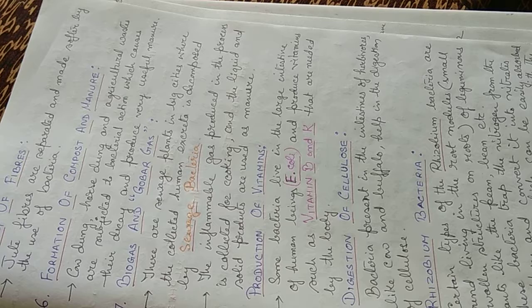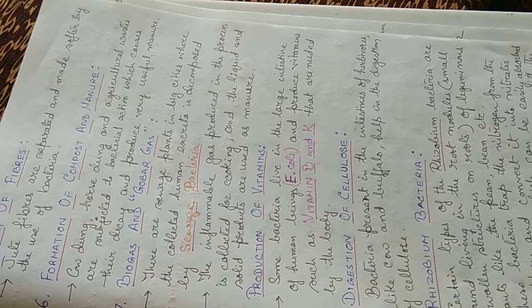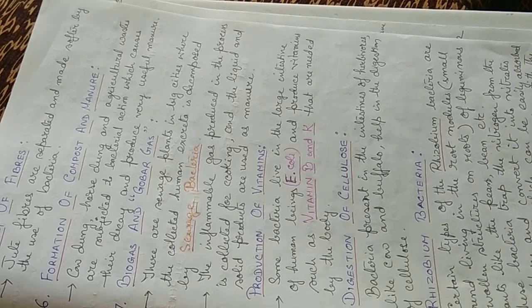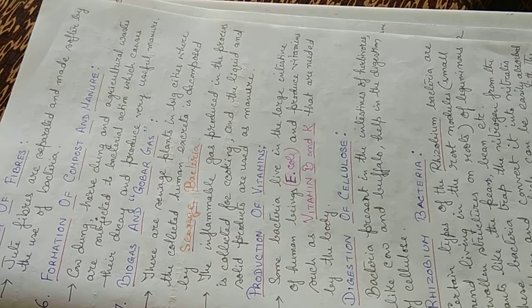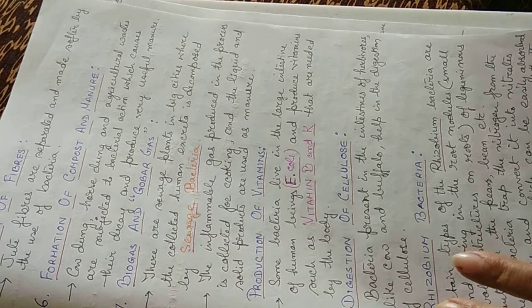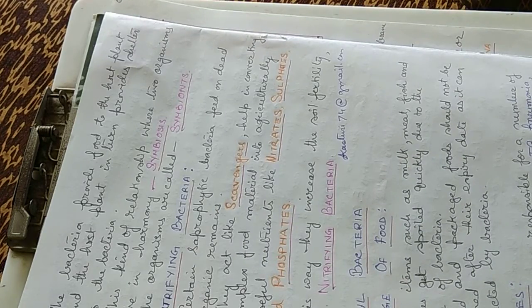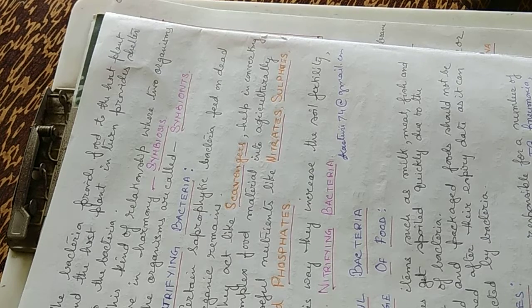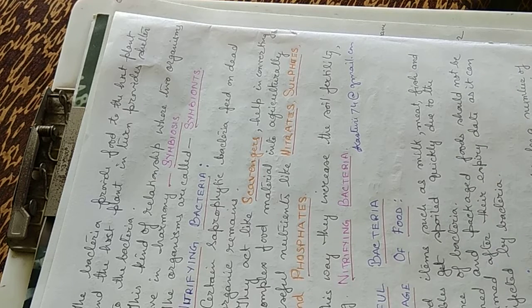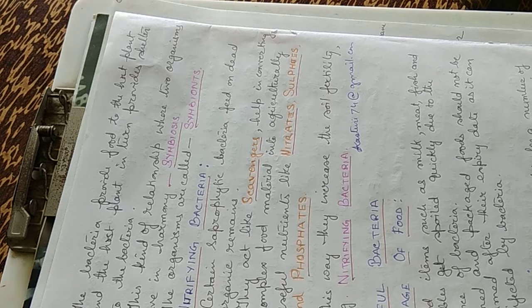Rhizobium bacteria are found in the root nodules, that is the small swollen structures on the roots of leguminous plants like peas, beans, etc. These bacteria trap nitrogen from the atmosphere and convert it into nitrates, mineral salts which can be easily absorbed by the plants from the soil along with water. The bacteria provide food to the host plant and the host plant in turn provides shelter to the bacteria. This kind of relationship where two organisms live in harmony is symbiosis. The organisms are called symbionts.